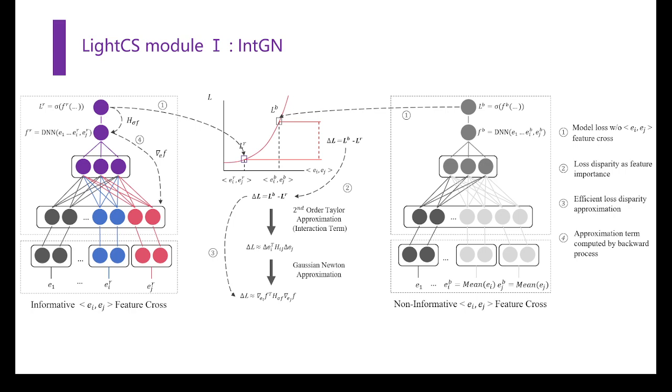The first module, IntGN, is used to conduct feature cross-importance approximation. With a pre-trained backbone model trained with pure single features, IntGN first switches a pair of single features,